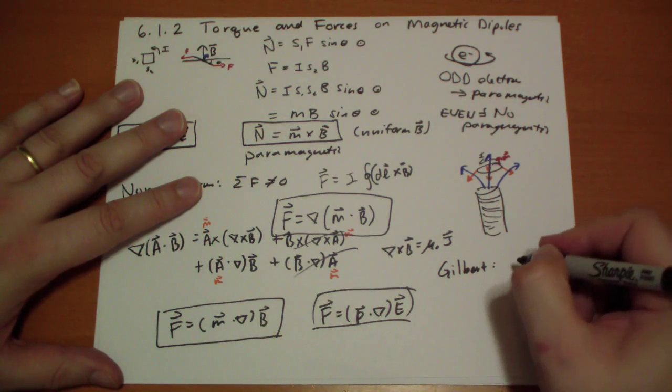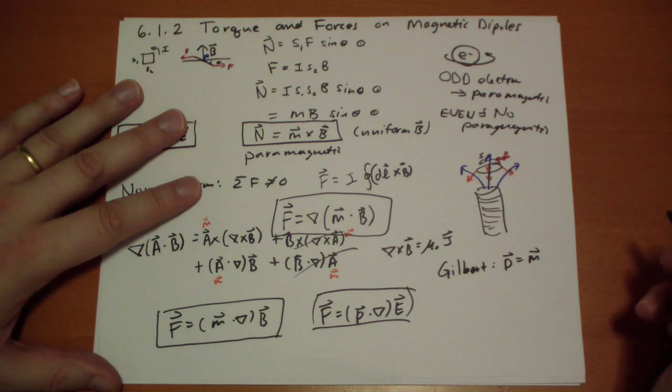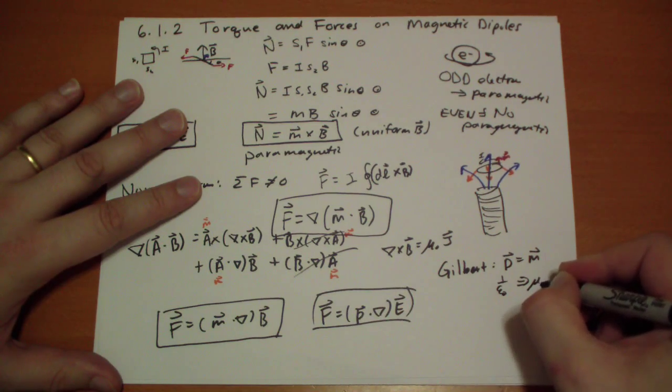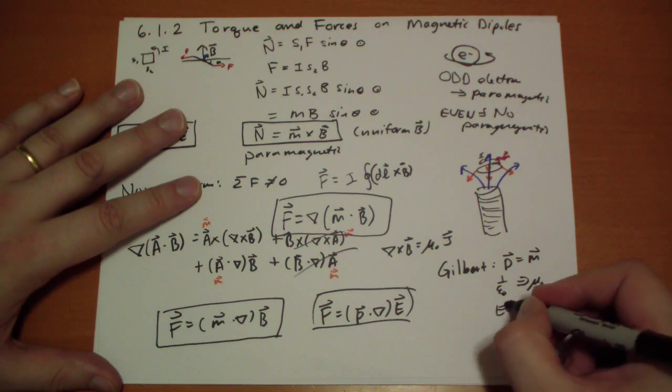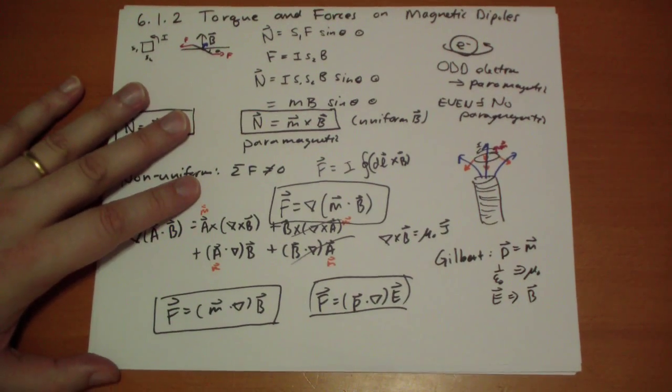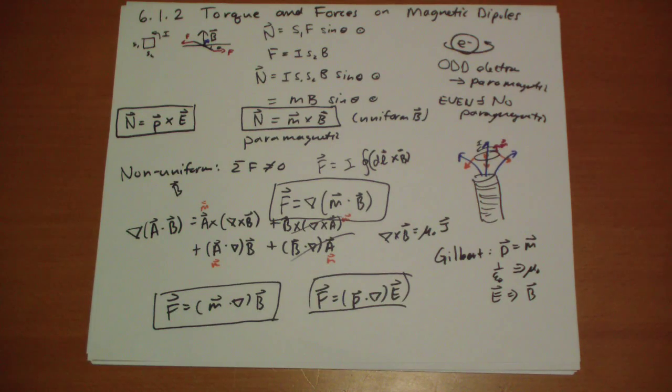The trick is that where you see p-vector, you substitute in the magnetic moment vector. And where you see 1 over epsilon-naught, you just substitute in mu-naught. And where you see the E-vector, you substitute in the B-vector. Those are the three little substitutions you can do, and pretty much everything in electrostatics applies to magnetostatics.